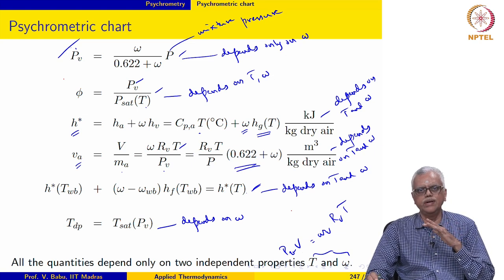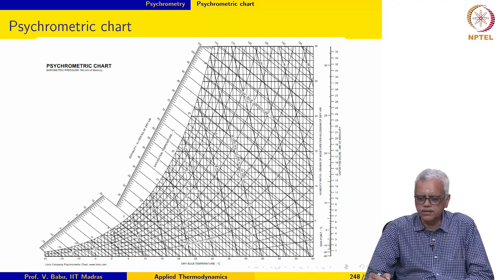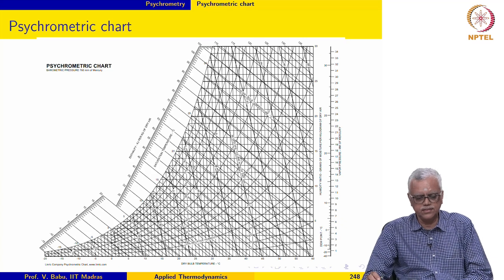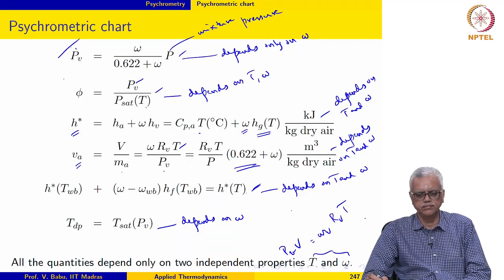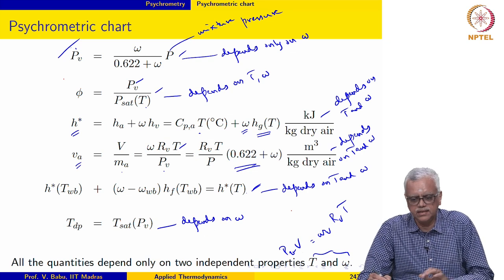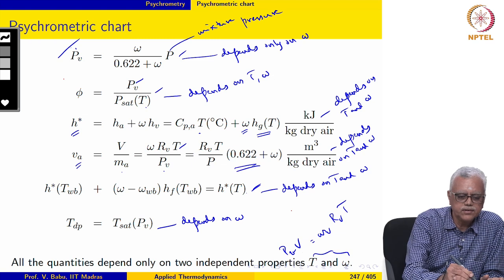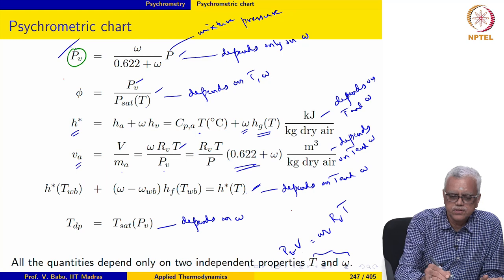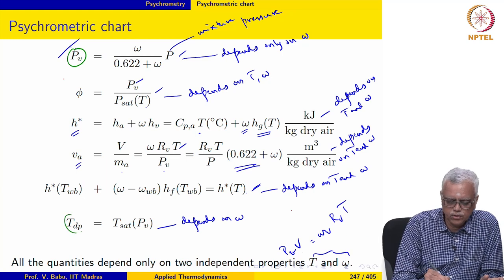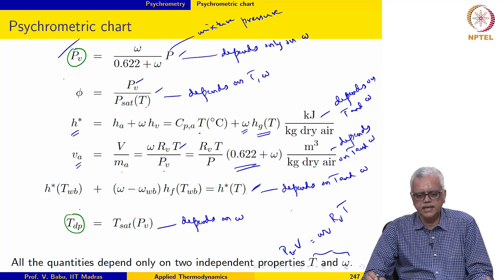The psychrometric chart has two axes: the vertical axis is omega, and the horizontal axis is T — the dry bulb temperature. Some quantities, interestingly enough, depend only on omega. PV depends only on omega, and dew point temperature also depends only on omega. All the others seem to depend on both T and omega.